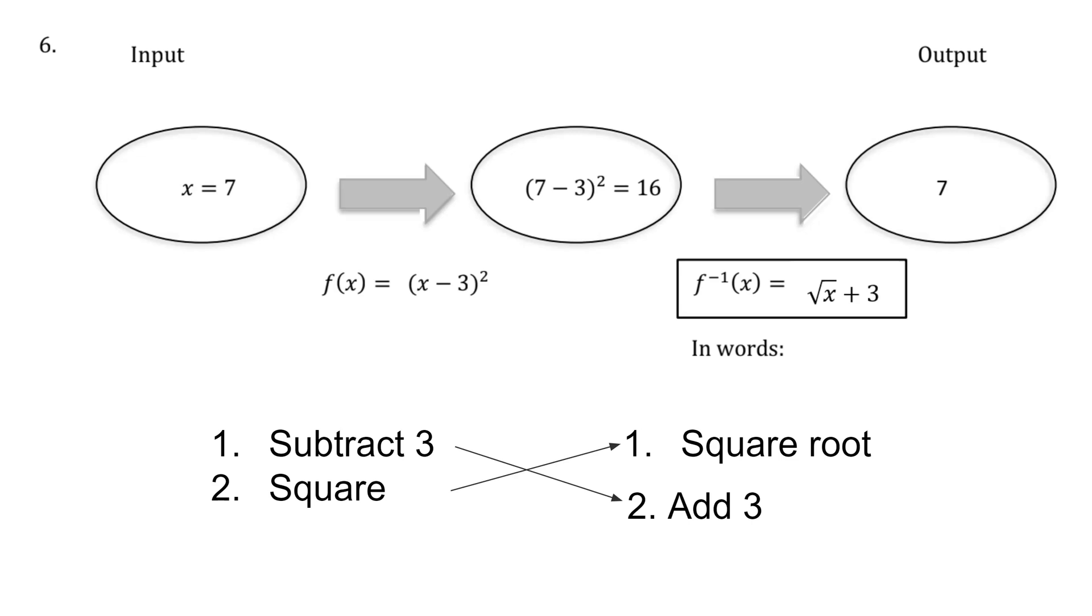Let's test it out. Previously, substituting 7 into f(x), 7 minus 3 was 4, and 4 squared was 16. If I substitute 16 into the inverse function rule, the square root of 16 is 4, and 4 plus 3 is 7. So I verified that my rule is accurate, or at least works for that case. And again, you can do this process with any number. They've just chosen 7 for this task.